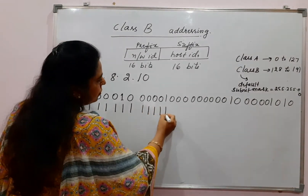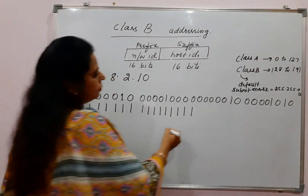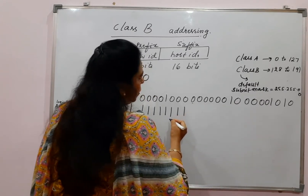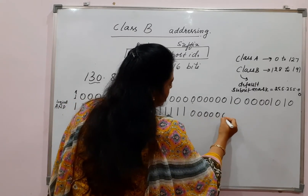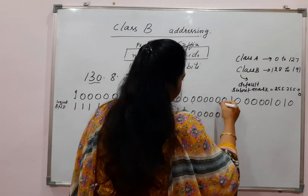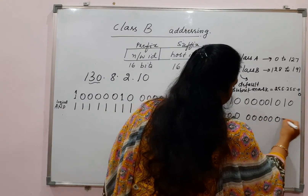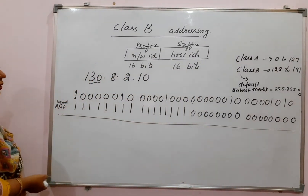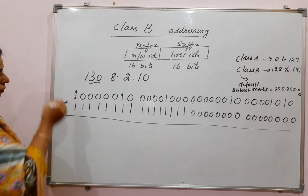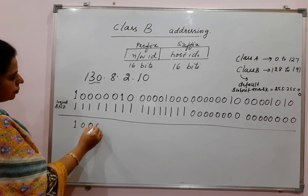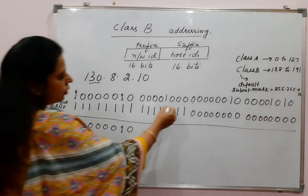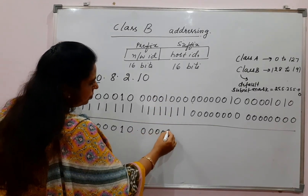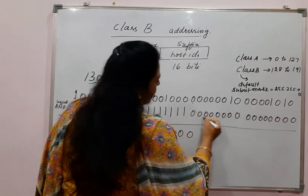The second octet is complete. Then from the third octet onward, you have all 0s in the subnet mask. Once you convert the subnet mask into binary and perform the logical AND operation, in the third octet you can see all 0s as the resulting value.